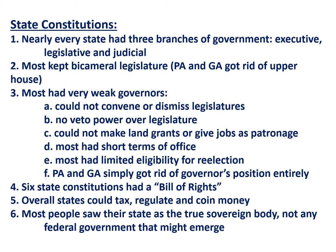Most states kept bicameral legislatures — two houses in their state legislature — but Pennsylvania and Georgia got rid of the upper house, saying there was no need for a check on the people. The governor in these constitutions was very weak. He generally could not convene or dismiss the legislatures, had no veto power, and couldn't make land grants or give jobs away as patronage. Most states had a very short term for the governor's office, some only one year, and most had limited eligibility for reelection. Pennsylvania and Georgia simply got rid of the governor's position completely. The weak executive was obviously a reaction to the royal governors in the colonies and how they had been abusing their rights.